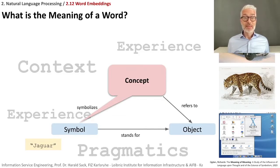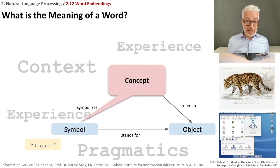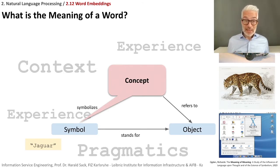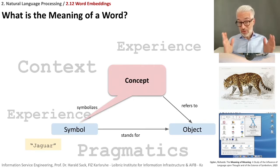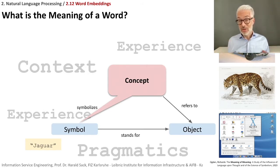What is the meaning of a word? We recall the semiotic triangle: a word as a symbol stands for a specific object in the real world or an abstract object, and symbolizes a concept, while the concept refers back to the object. This tells us that to understand the semantics — the meaning — of a word, we depend on context, experience, and pragmatics. Context means we have to look left and right: how is this word used, and in which context? Context is determined by pragmatics — the speaker's intention in how they phrase and express a message.